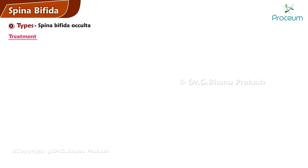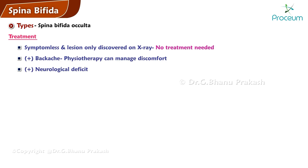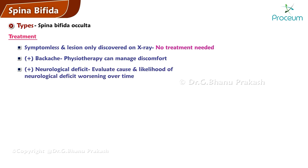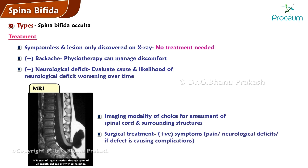When a patient is symptomless and the lesion is only discovered on an X-ray taken for a different problem, no treatment is generally needed. If the patient presents with backache, physiotherapy can often help manage the discomfort. For cases presenting with a neurological defect, it is crucial to evaluate the cause and the likelihood of the neurological deficit worsening over time. MRI is likely the imaging modality of choice for detailed assessment of the spinal cord and surrounding structures. Surgical treatment might be necessary in some cases, particularly if there are symptoms such as pain or neurological deficits, or if the defect is causing other complications.